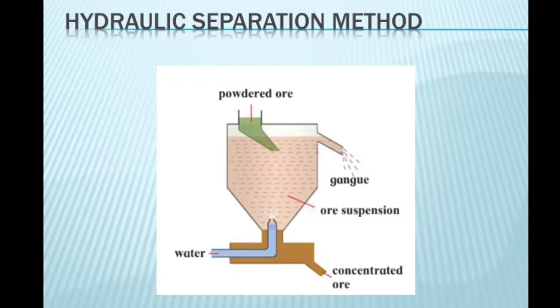Finally, ground ore is released in the tank and forceful jet of water is introduced in the tank from the lower side. Gang, that is impurity particles, are lighter and therefore they flow out along with the water jet from the outlet on the upper side of the tank and get collected separately. At the same time, the heavier particles of the ore are collected at the bottom of the lower side of the tank.